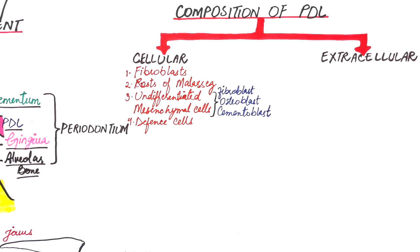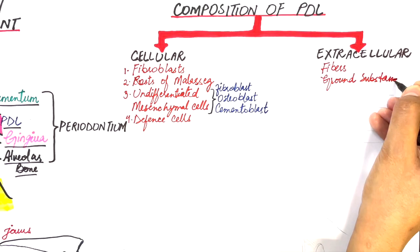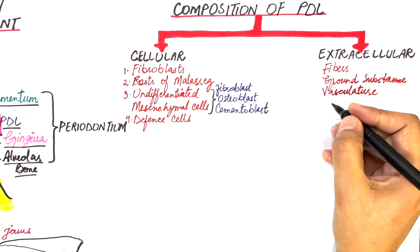The extracellular matrix consists of fibers, ground substance, rich vasculature, nerves, and lymphatics.